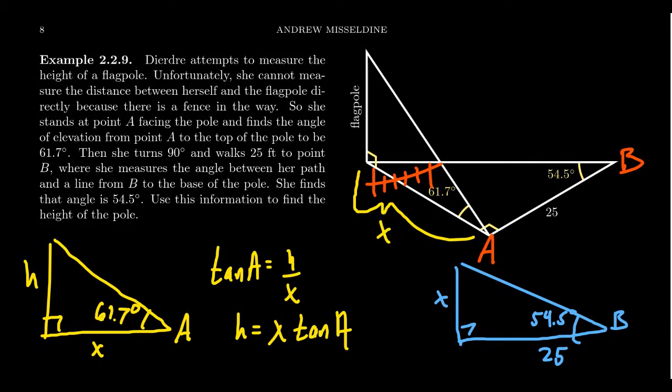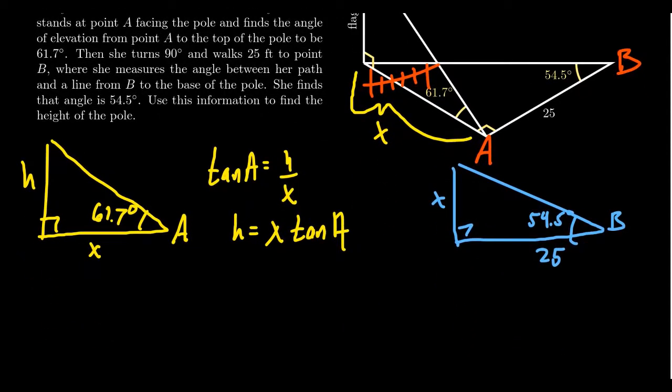If we use the tangent ratio in that situation, we're going to get that X over 25 equals tan B. And therefore, X equals 25 times tan B.